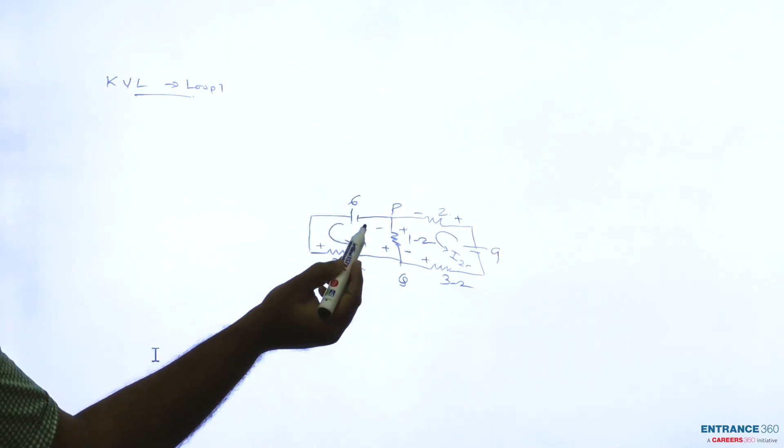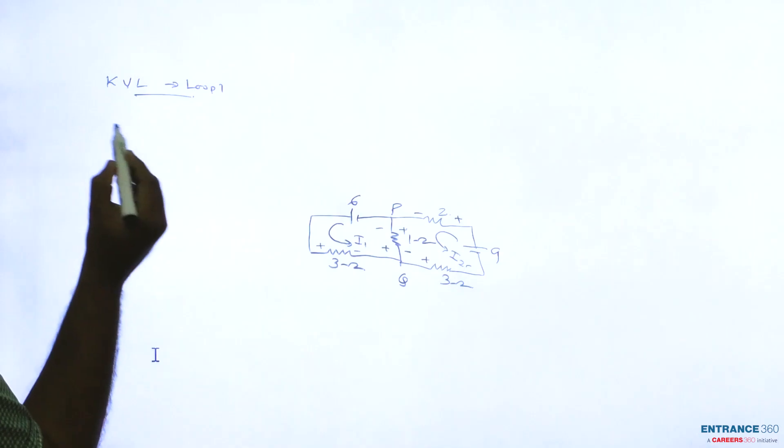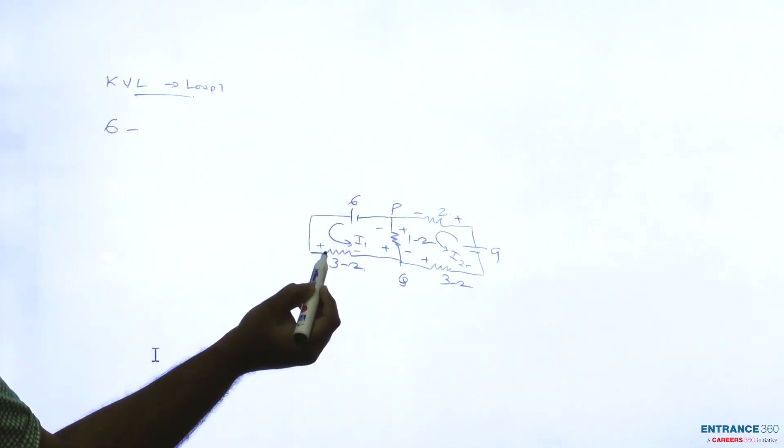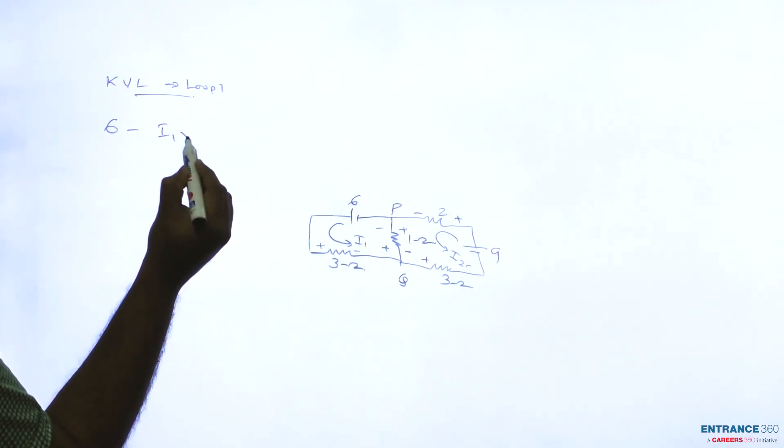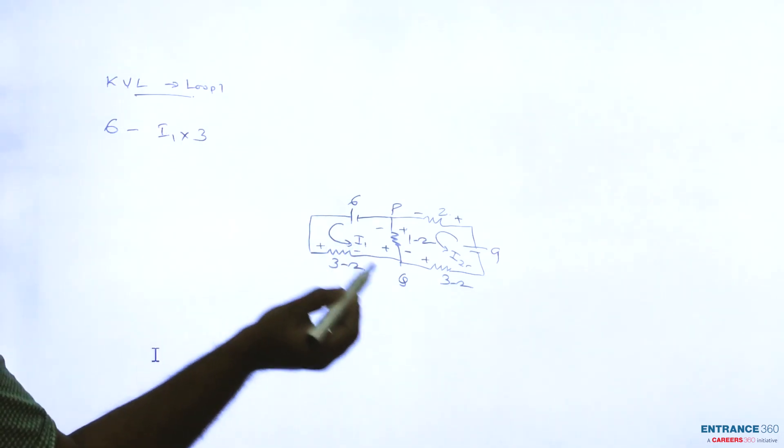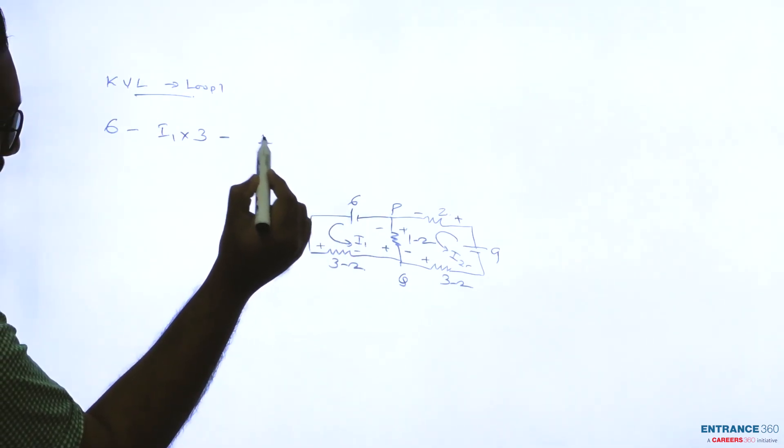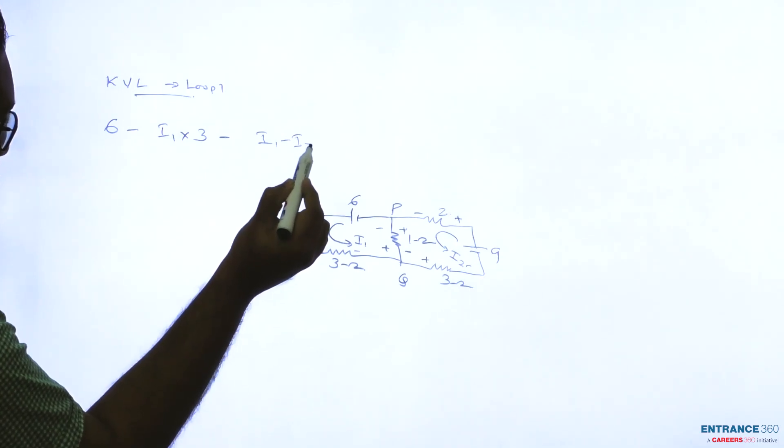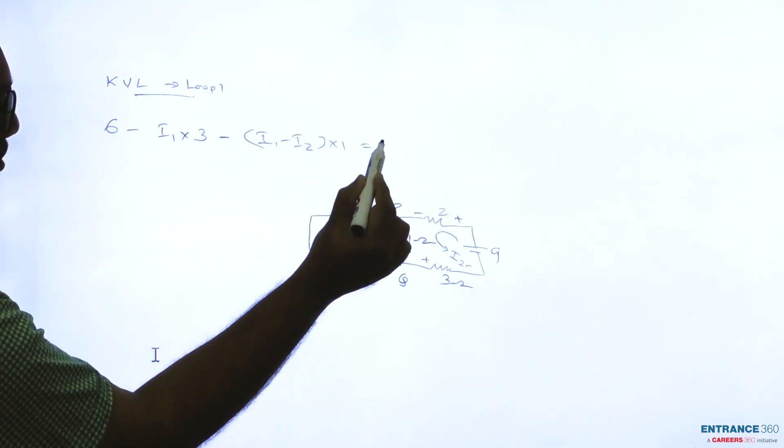Therefore, we are going in anticlockwise direction and we can write: 6 minus current through three ohm resistance is I1, I1 into 3, minus current through one ohm resistance is we have said it is I1 minus I2 into 1 ohm equal to 0.